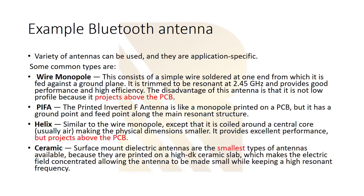Now we'll give a real example of which kind of antenna we use for RF applications. Take Bluetooth — the frequency of Bluetooth is around 2.45 GHz. Generally, we use four kinds of antennas. The first one is the wire monopole, which consists of a simple wire that starts from ground and extends upward. The problem is that it projects above the PCB, so it is 3D rather than 2D. The second is PIFA — a printed inverted F antenna — which is like a monopole printed on a PCB, but with a ground point and a feed point along the main resonance structure.